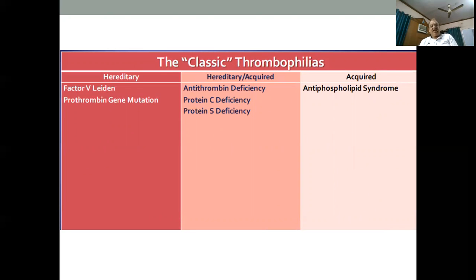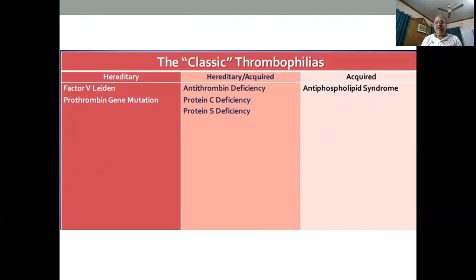What is the classical thrombophilia? There are many factors, but in the hereditary group you can test for factor V Leiden, prothrombin gene mutation, antithrombin deficiency, and protein C and protein S deficiency. In the acquired group, the main condition is antiphospholipid syndrome.